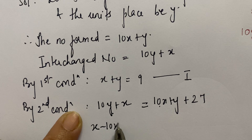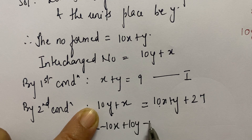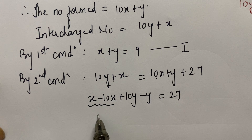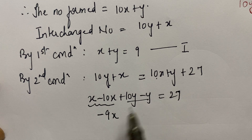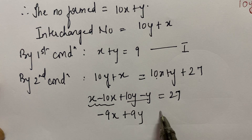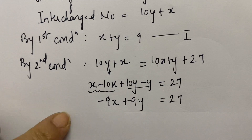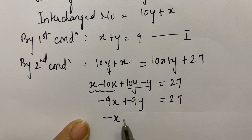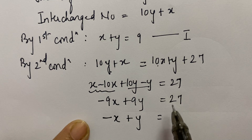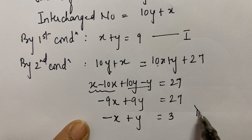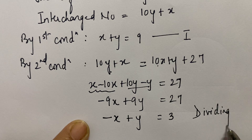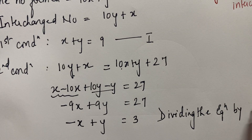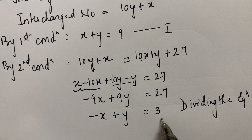So we get: minus 10x plus 10y minus y equals 27, which gives minus 9x plus 9y equals 27. Dividing this equation by 9, we get minus x plus y equals 3. This becomes Equation 2.